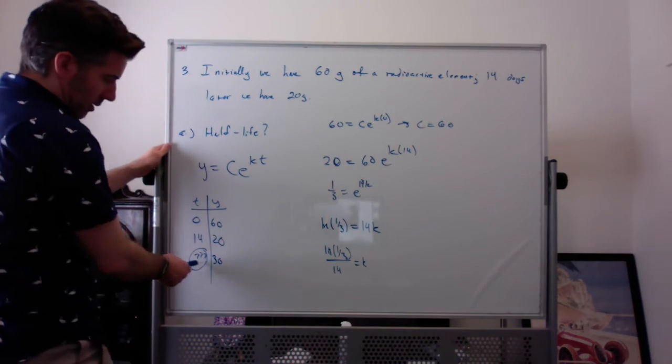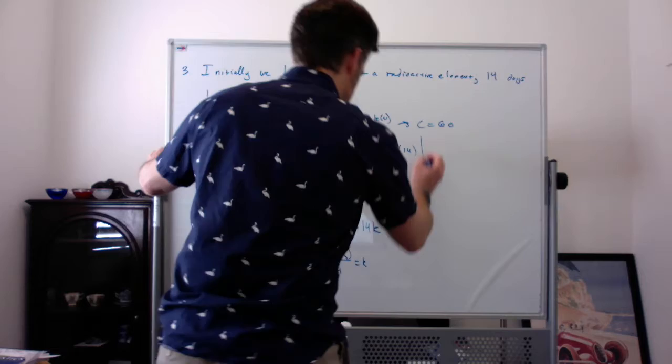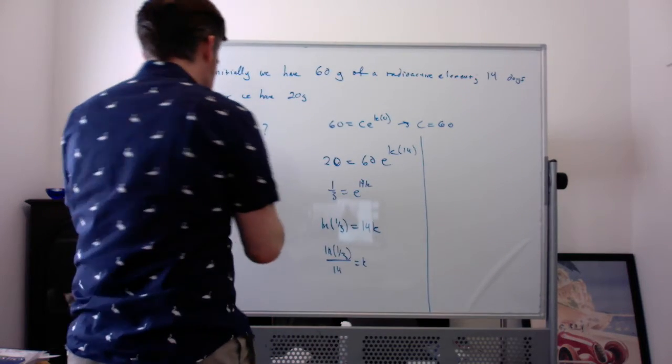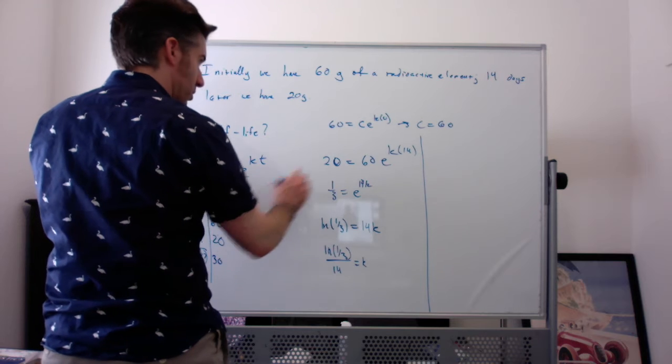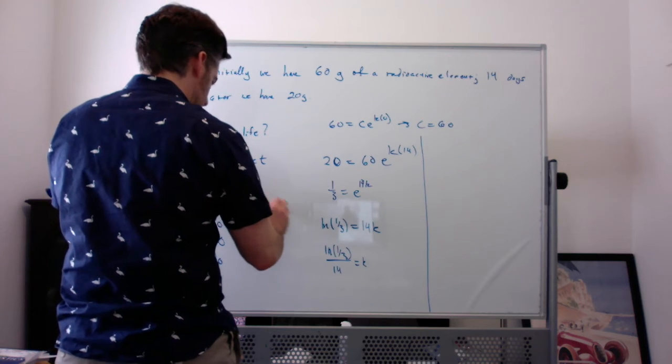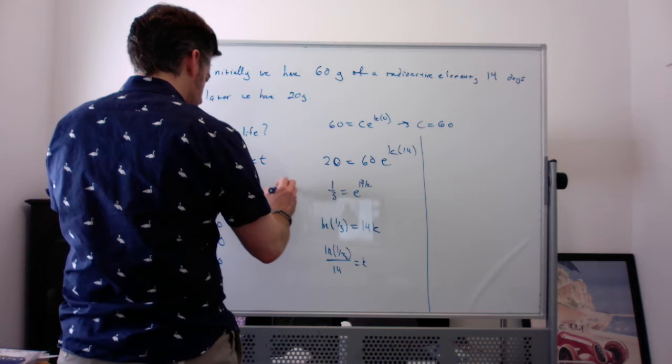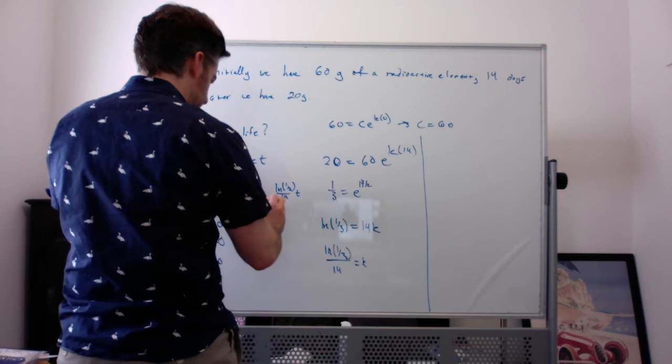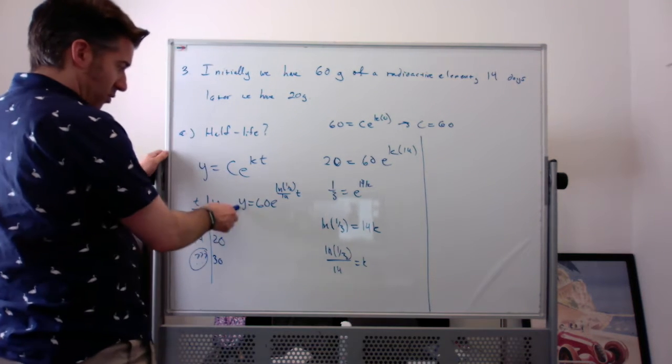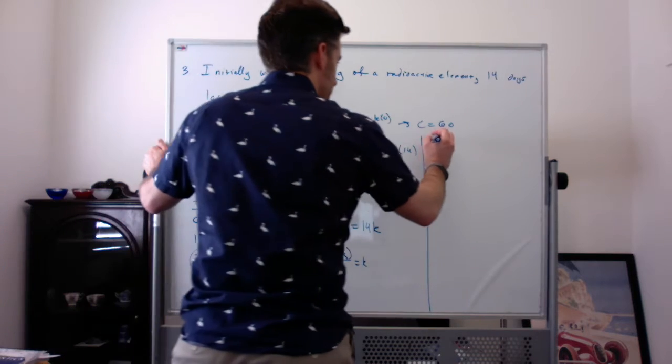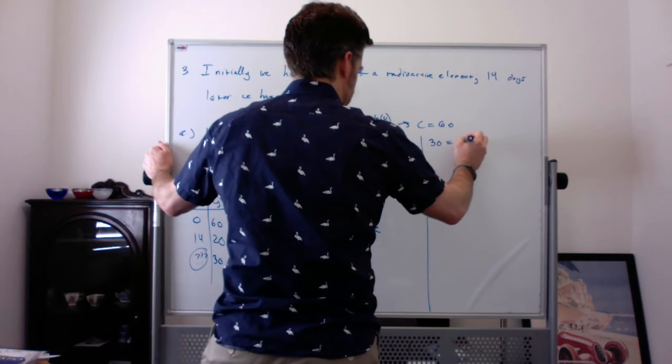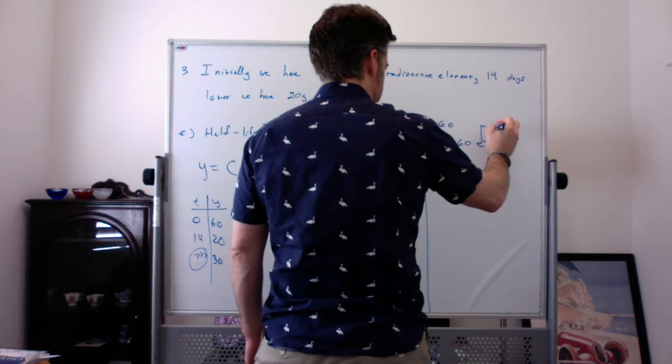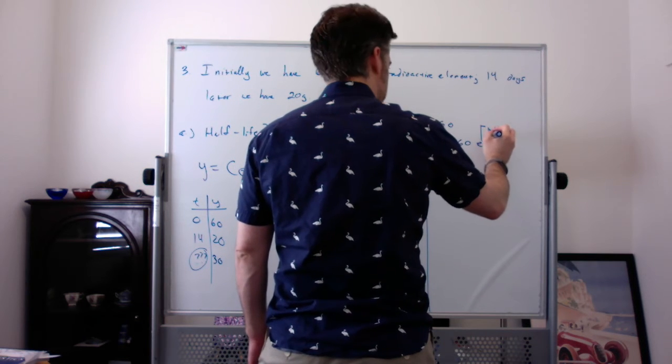And then we're trying to figure out what time this is for the half-life. So we're going to take our c and our k, plug it into the model. So the model looks like y equals 60e^(ln(1/3)/14 times t). And then we're going to plug in 30 for y and solve for t. So 30 equals 60e^(ln(1/3)/14 times t).